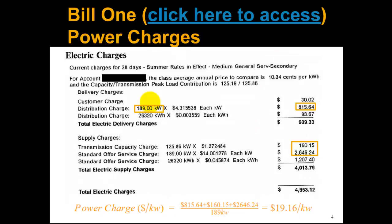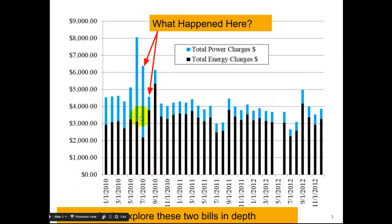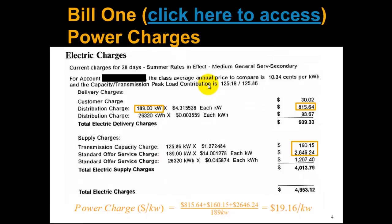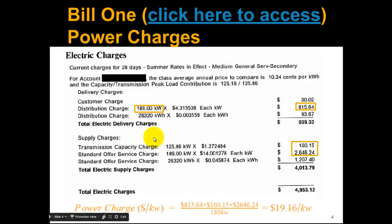Let's look at what happened here first. If we look at the first bill — the bill with the high power charges — they were being charged for delivery and supply from the power company themselves; there wasn't a third party supplier. If we add up all the different power charges and divide by the 189 kilowatts, we get more than $19 per kilowatt, which is actually pretty expensive. The big portion of that is really this $14 in the supply charges.